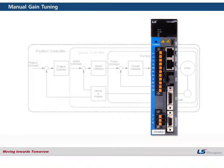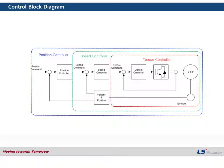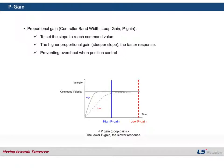Today I'm going to introduce some frequently used parameters out of various gain adjustment parameters. Although we don't guarantee that this will work for every situation, we believe this can give you a guideline for better gain tuning procedure. This is a simple diagram for a controller. Basically we have three kinds of controllers: the position controller, the speed controller, and the torque controller.